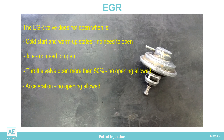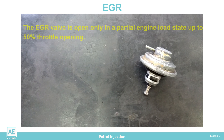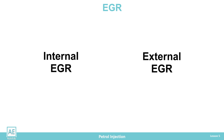If the EGR valve opens in any of the above cases, the number of revolutions and power drop would adversely affect engine operation. So the EGR valve is open only in a partial engine load state, up to 50 percent throttle opening. In addition to lowering the concentration of nitrogen oxides, EGR also reduces the possibility of auto-ignition of the mixture and simultaneously reduces fuel consumption. There are internal and external EGR types.